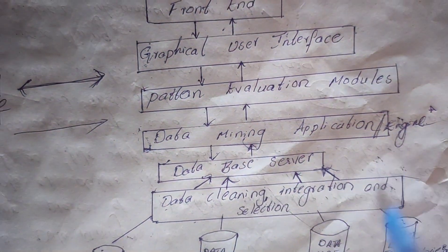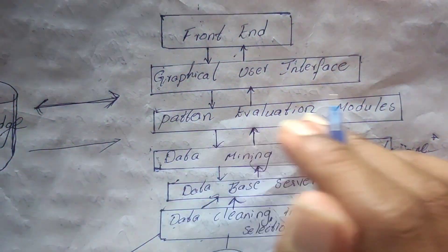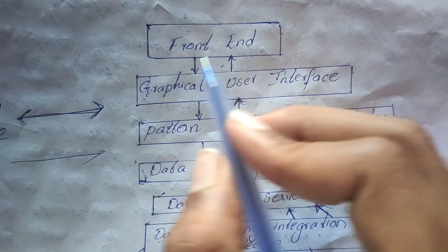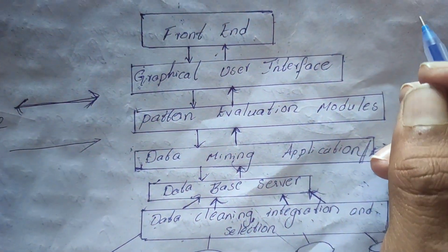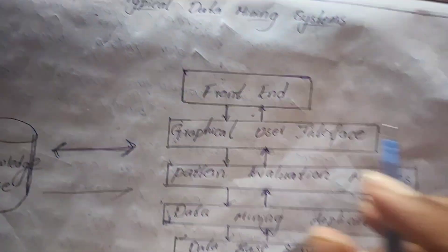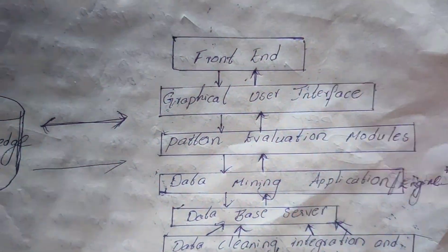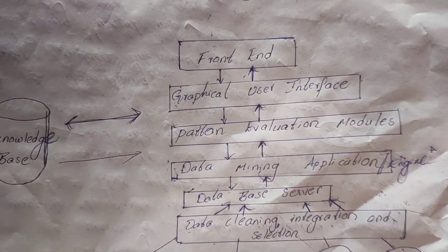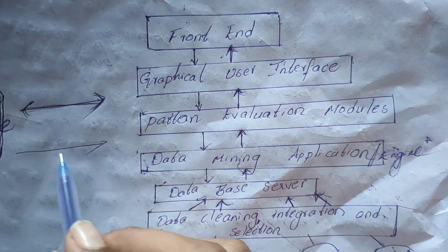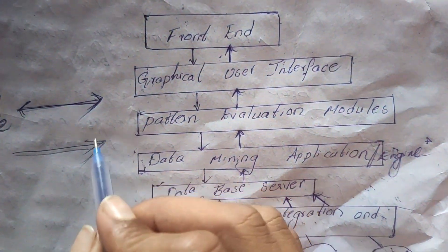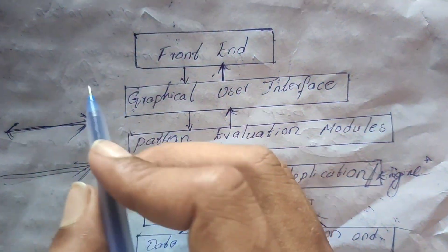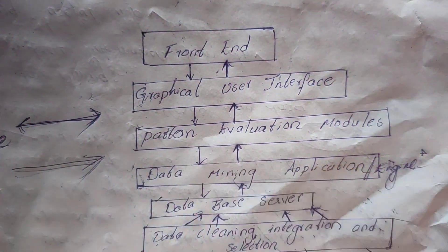The data mining applications contain multiple modules like classification, clustering, and prediction algorithms. From there, the data goes to the pattern evaluation module. Next is the graphical user interface, which allows communication between the system and the user. Finally, there is the knowledge base, which is important for guiding the search for hidden patterns and interacts with both the pattern evaluation module and the data mining engines.